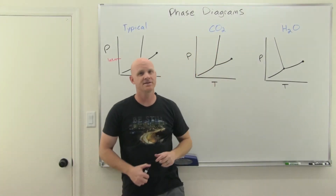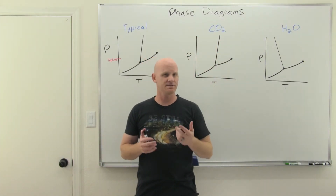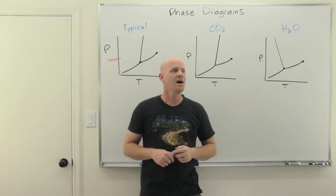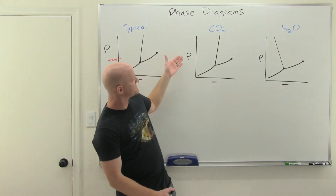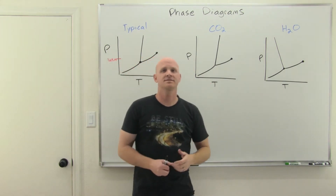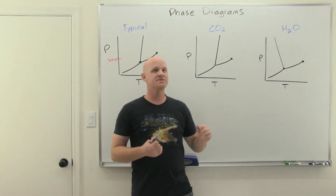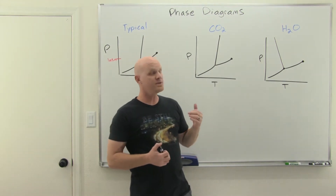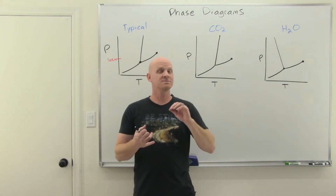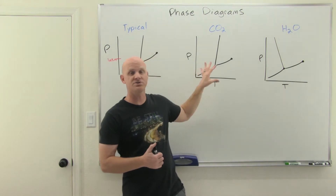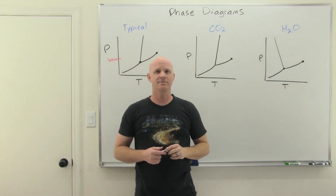Phase diagrams are going to be the topic in this second lesson in a chapter on solids and liquids. We're going to take a look at graphs of pressure versus temperature and some of the unique characteristics of these graphs for a few different substances. We're also going to look at some special vocabulary associated with different regions or points on these different phase diagrams.